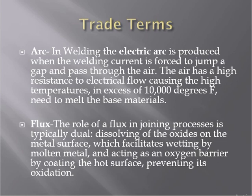The next trade term is 'flux.' The role of flux in the joining process is typically dual: dissolving the oxides on the metal surface, which facilitates wetting by molten metal, and acting as an oxygen barrier by coating the hot surface to prevent oxidation. Flux shields the material and prevents oxidation, improving the weldability and strength of the weld metal.